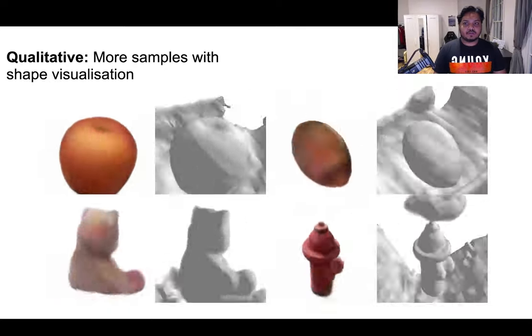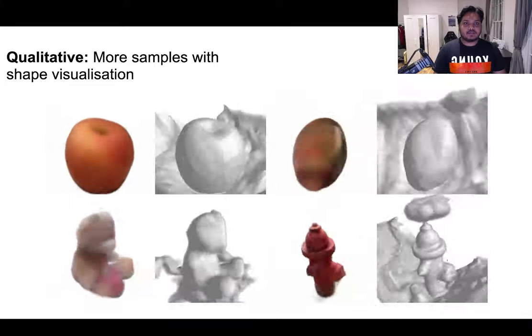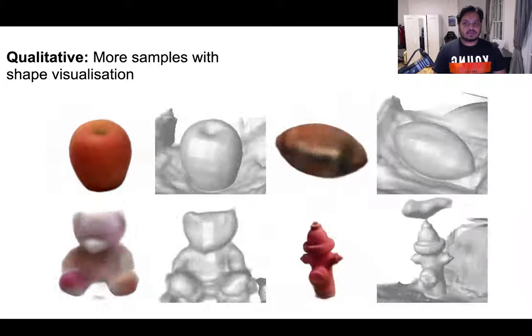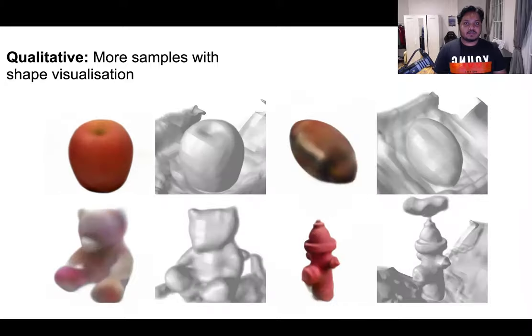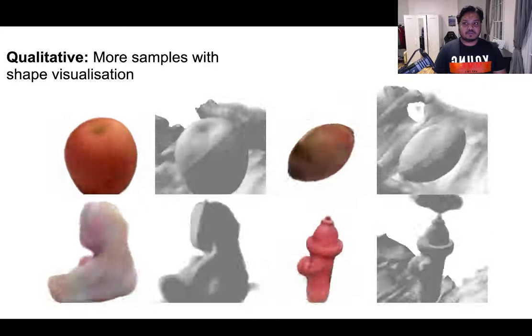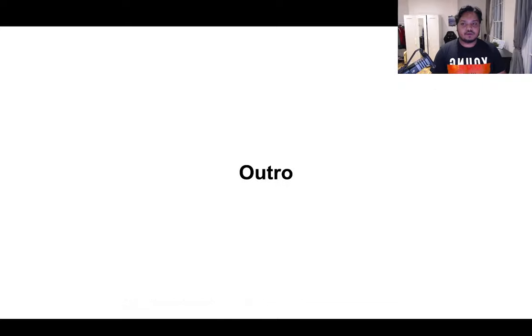Here we show the shapes of the generated 3D samples by rendering the normals and diffuse shading them with a single fixed light. As apparent, the diffusion network is able to mostly distill clean and floater-free density fields from the 2D image supervision alone.